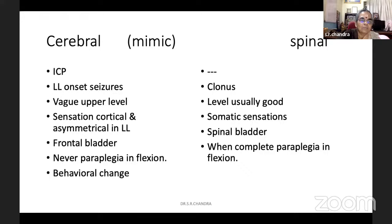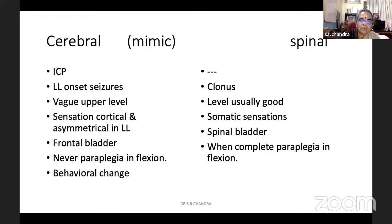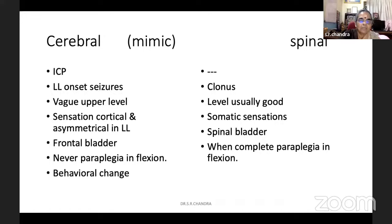And there can be lower limb onset seizures. In the interhemispheric region, the lesion is there. It starts as paraplegia at the homunculus, and the lower limb patient may have seizures. But if you are pointing the pathology to the spinal cord, you may think that seizure is clonus. How to differentiate clonus? Clonus comes on stretch only — the limb has to be stretched, by the patient planting their feet on the floor. It will never come spontaneously and it usually doesn't march. Whereas lower limb onset seizures are spontaneous, they have a march, and they do not need a stretch.